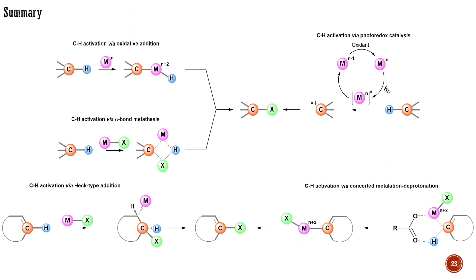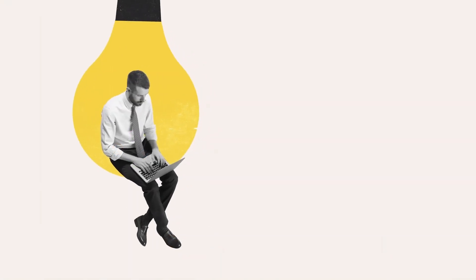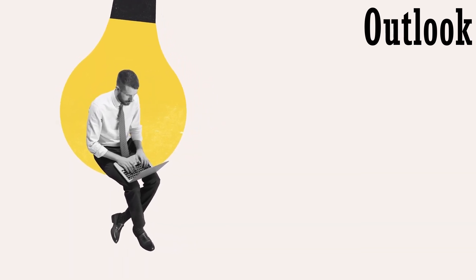To sum it up, in this lecture we have learned the main mechanisms of CH bond cleavage initiated by transition metals. Accordingly, CH activation can occur via oxidative addition to the metal, sigma bond metathesis, photoredox catalysis, HEC-type additions, and a concerted metallation deprotonation sequence. In the next lecture, we will concentrate on the modern developments in CH activation. Thank you for your attention.